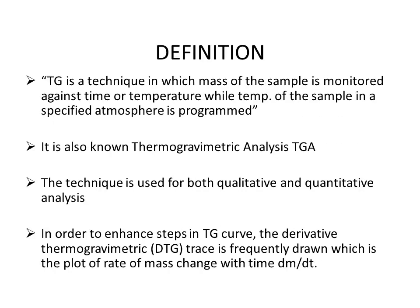This technique is also known as thermogravimetric analysis, or TGA. The technique can be used for both qualitative and quantitative analysis — meaning we can determine what is present in our sample and in what quantity. The final result obtained from the thermogravimetric technique is in the form of a graph called the thermogravimetric curve. To enhance the steps in the TG curve, the derivative thermogravimetric trace (DTG) is frequently drawn, which is a plot of rate of mass change with time, expressed as dm/dt.